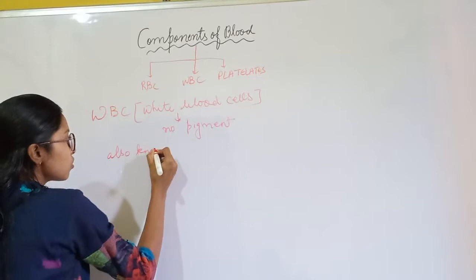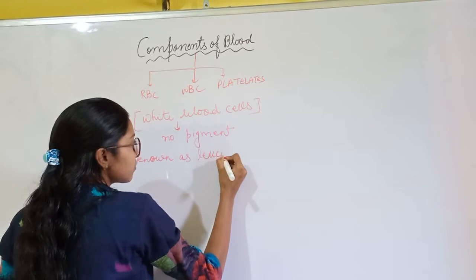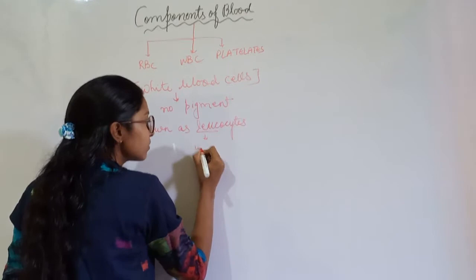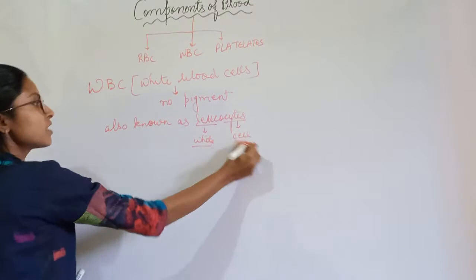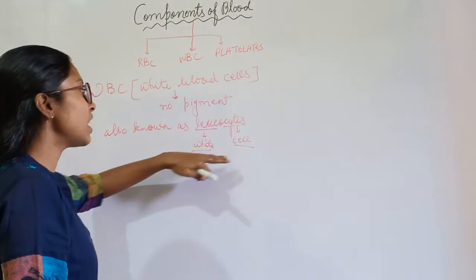White blood cells are also known as leukocytes, because 'leuko' means white and 'cyte' means cell, so leukocyte means white cell.